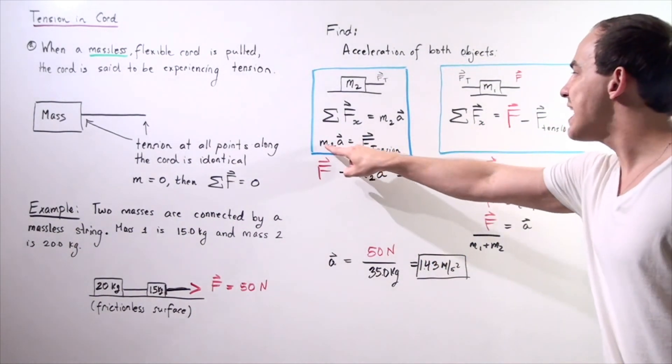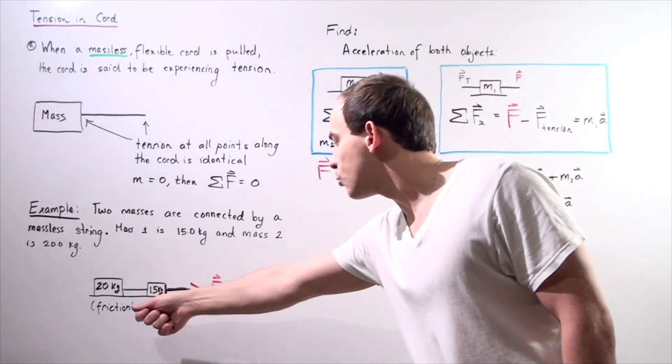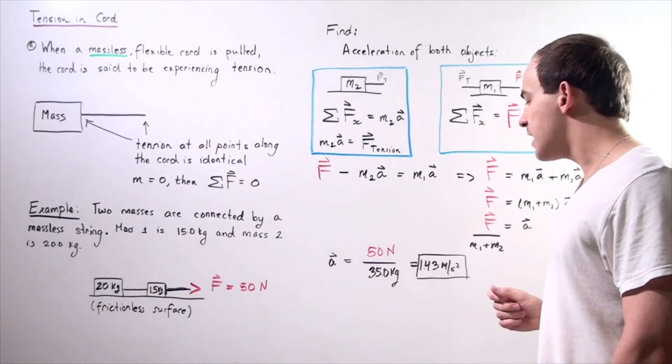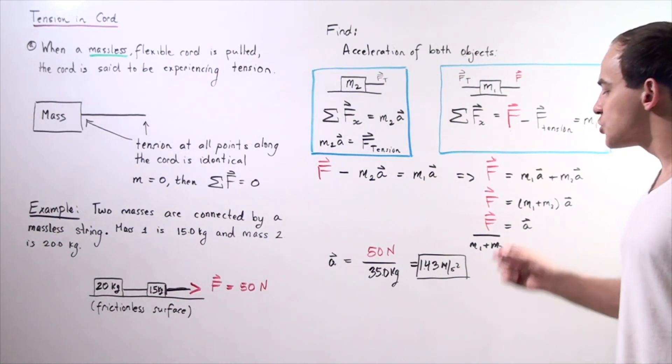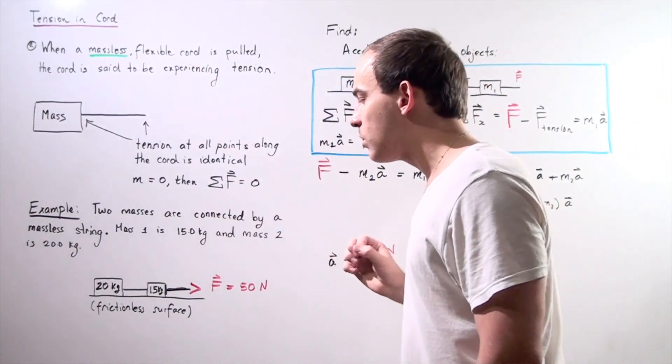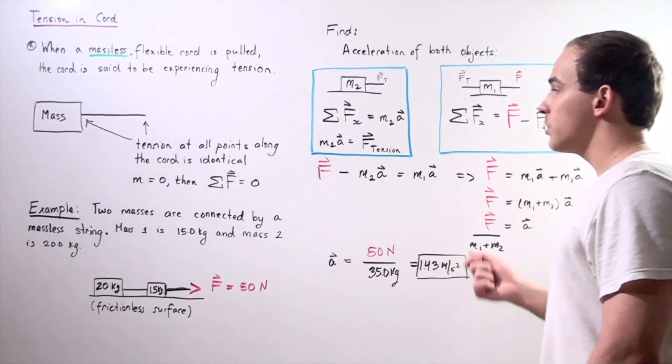I get force minus mass two times acceleration equals mass one times acceleration. I take out my acceleration term and bring the mass one plus mass two on the left side of our equation. My acceleration of both objects is equal to the force with which I pull on these objects divided by their total mass. So 50 newtons divided by 35 kilograms, taking 20 plus 15, equals 1.43 meters per second squared. That means both of my objects are accelerating with the same exact rate along the x-axis of 1.43 meters per second squared.